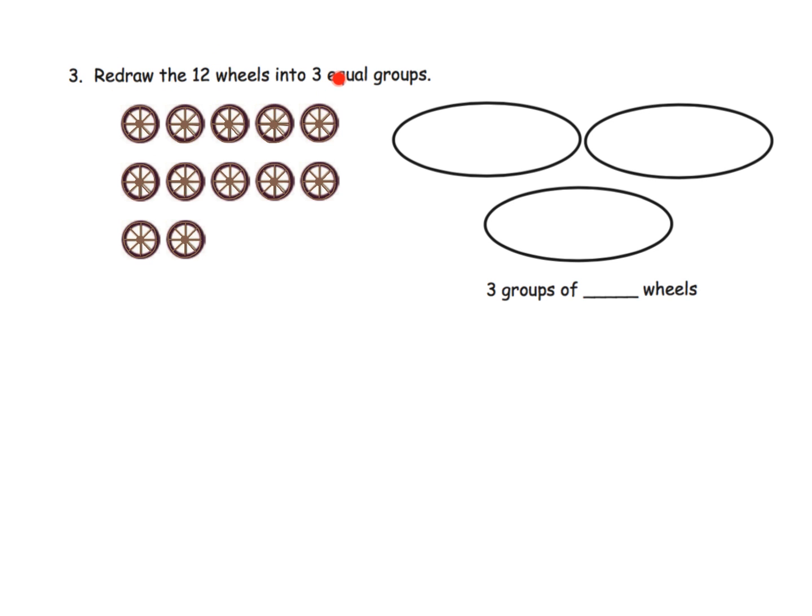Here the directions say to redraw these 12 wheels into three equal groups. So we've got these 12 wheels over here, and they're not in three equal groups. You can sort of see one, two, three groups but they're unequal, or you can go up and down and see one group, two groups, three, four, five—well, five groups but they're unequal. So the idea is we want to create three equal groups.